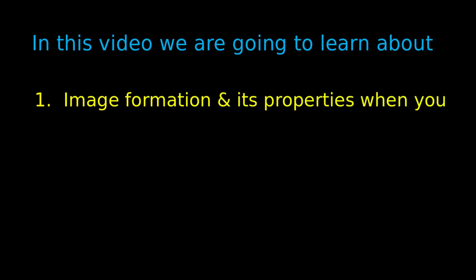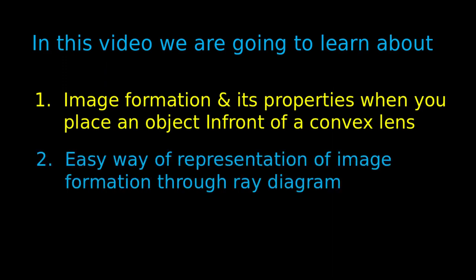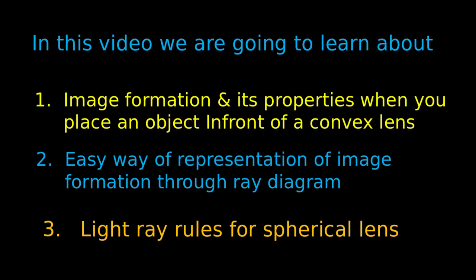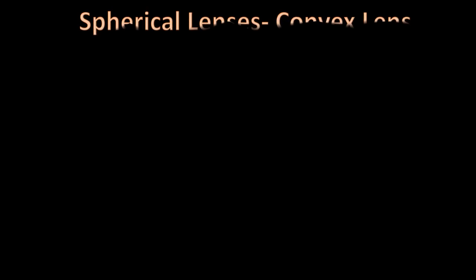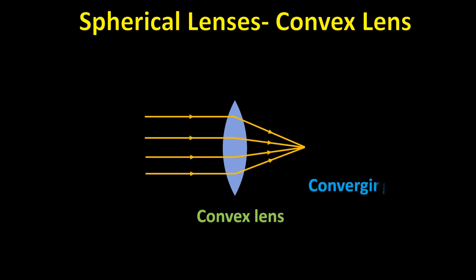In this video we are going to learn about image formation and its properties when you place an object in front of a convex lens, including easy representation through ray diagrams. A convex lens is a spherical lens, also called a converging lens, because all the light rays converge at a point after passing through the lens. This converging point is called the principal focus.